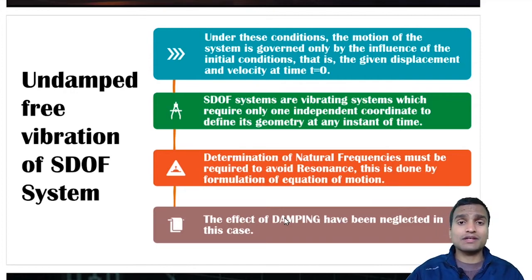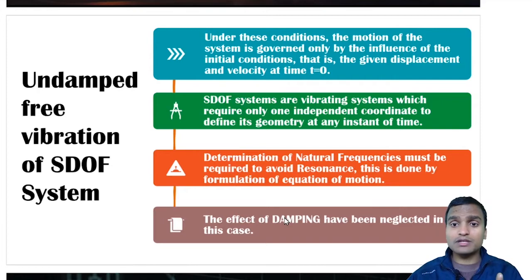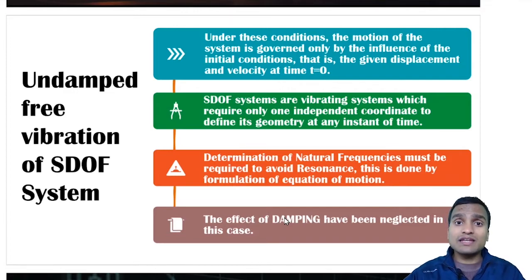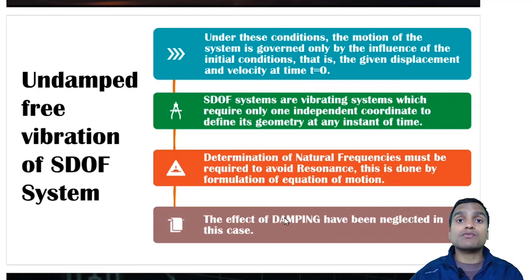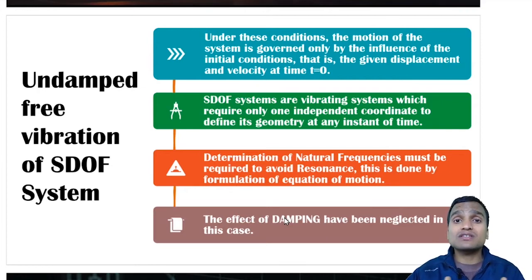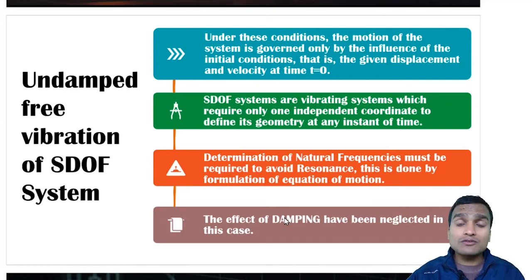Since there is no external force, we give some displacement or velocity at time t equal to zero. Single degree of freedom systems require only one independent coordinate to define their geometry at any instant of time. In the analysis, we determine the natural frequencies. This is important because if the natural frequency matches the frequency of external forces, there are chances of resonance, which amplifies displacement and causes destruction. That is why we formulate equations of motion, solve them, and interpret the results.